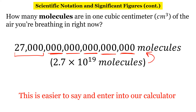If you were to plug that into your calculator, it would come out to the same number. But this is a much easier way for us to represent that number — not only is it easier to say, but it's also a lot easier to enter into our calculator. So in science, we deal with a lot of really big numbers, so we use scientific notation.